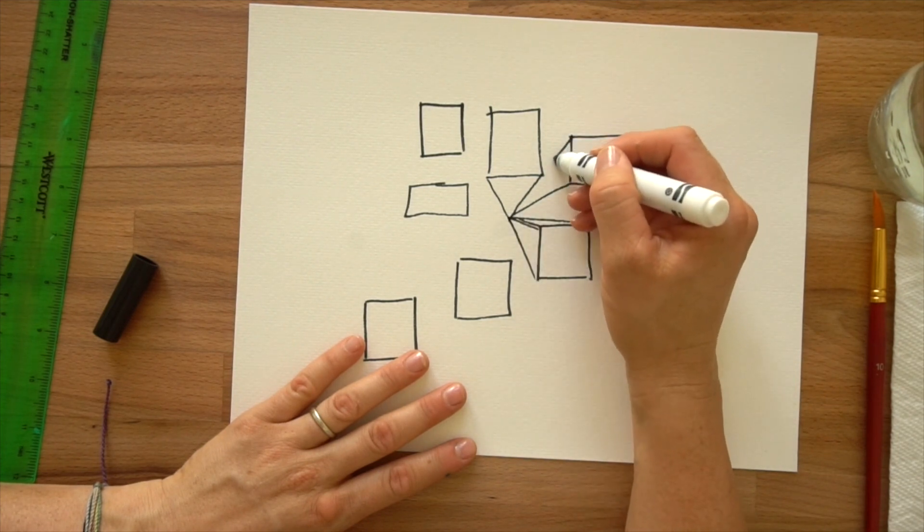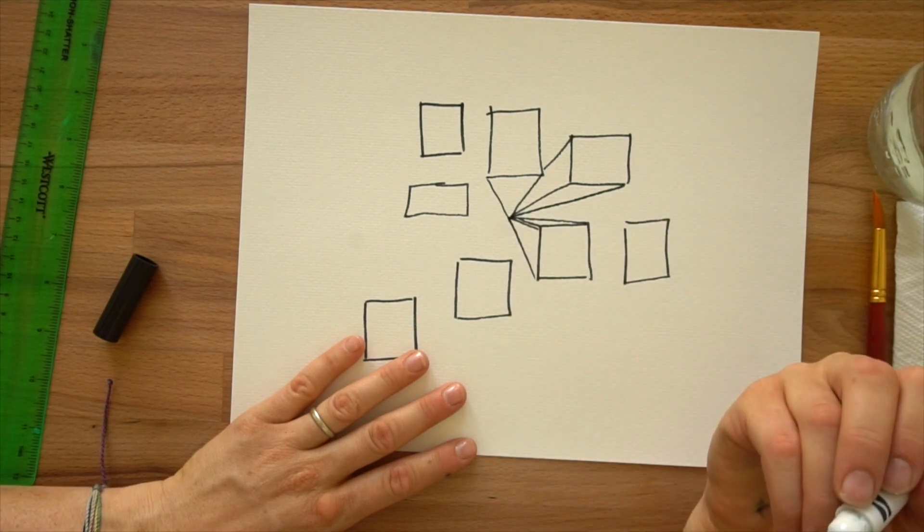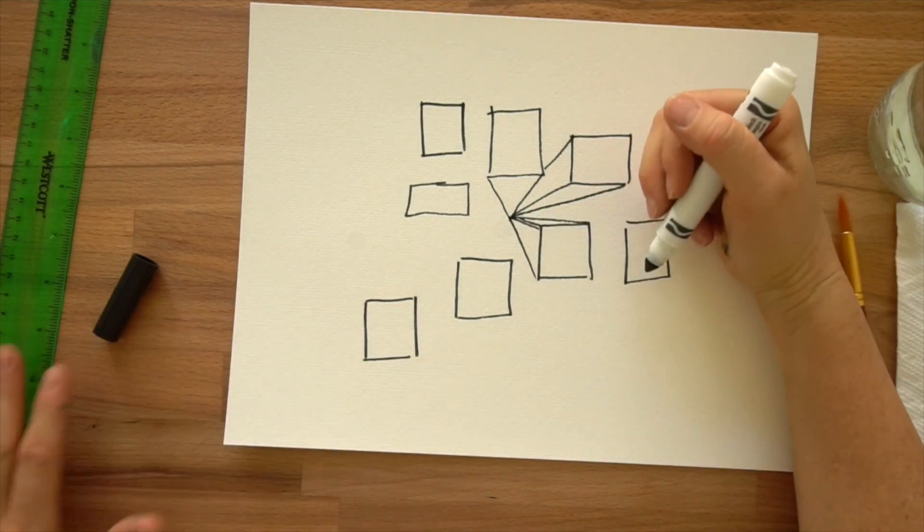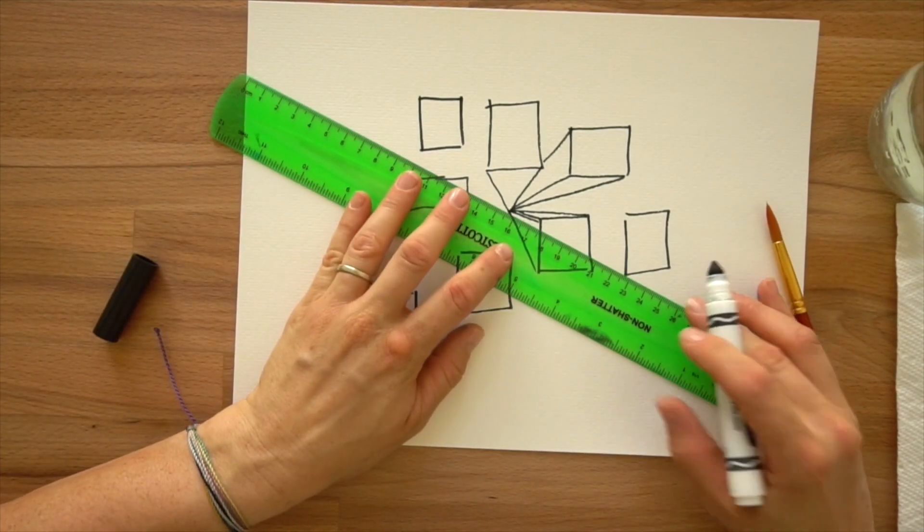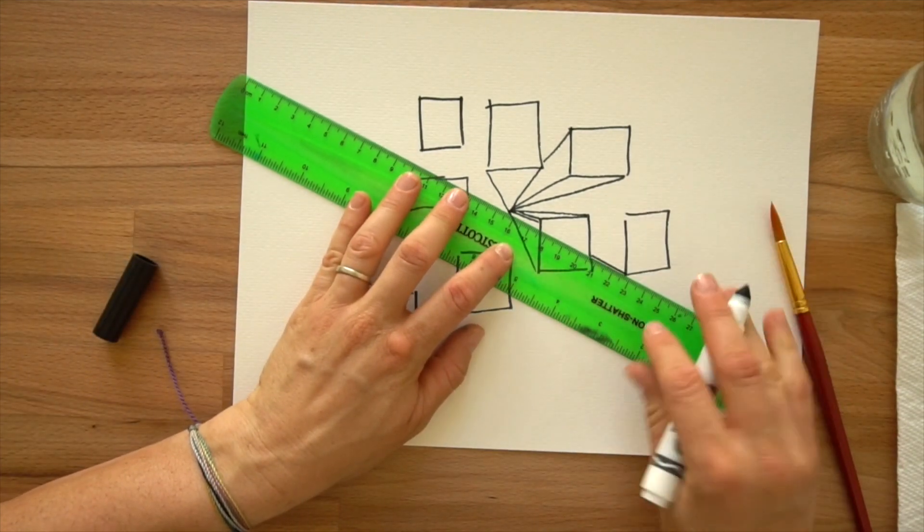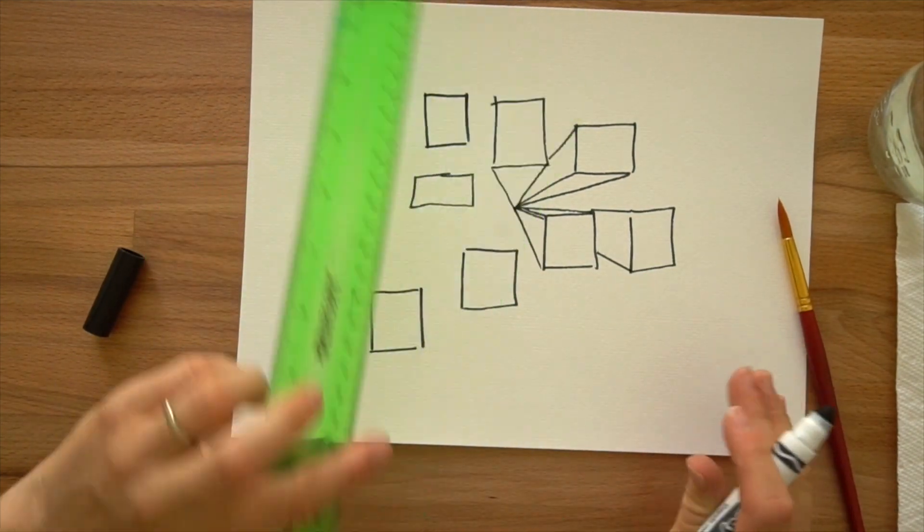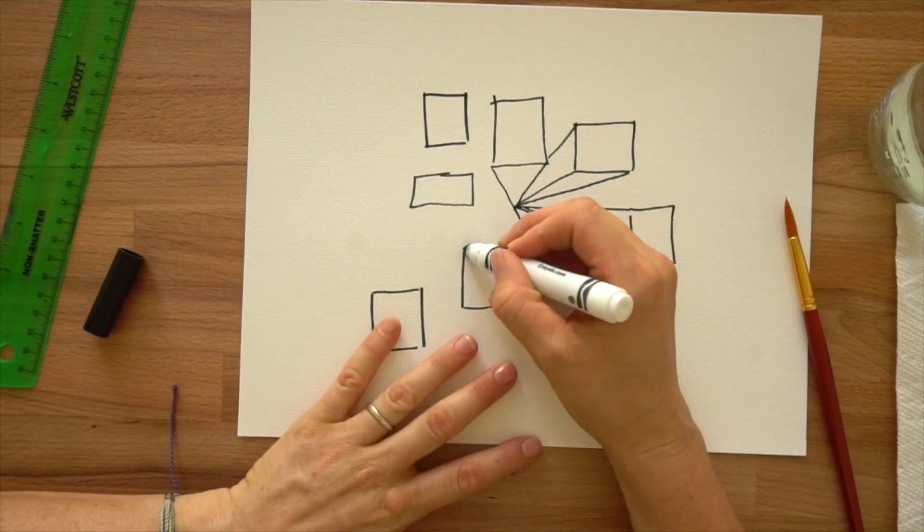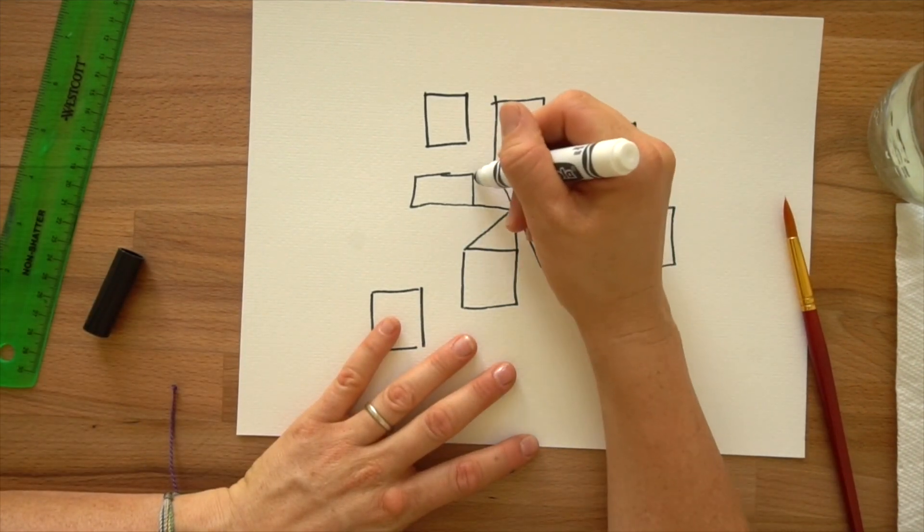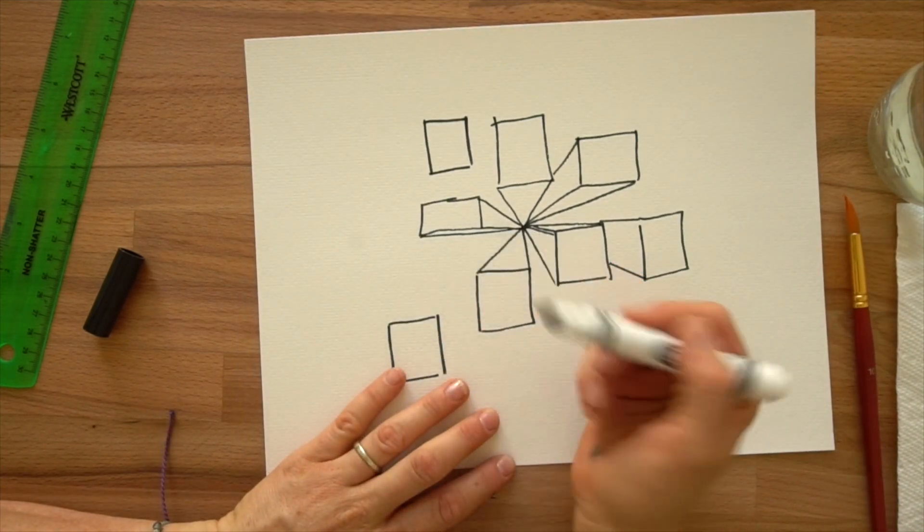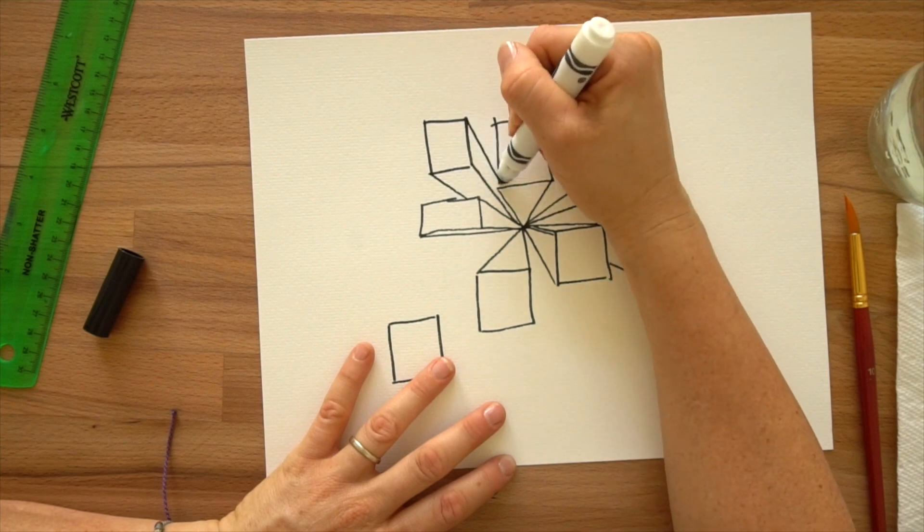There's nothing in front of this one so we can just draw lines from those two corners back. Then this one kind of hits into this one so we're just going to stop it. Same thing with this one. Use your ruler for this far one because it's going to go through this box and stop about right there. This one you can again use your ruler. You're just drawing lines from all of those corners back to the middle and if it runs into another box you just stop it.